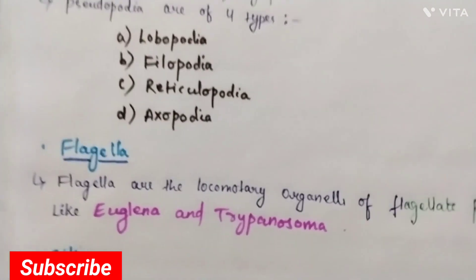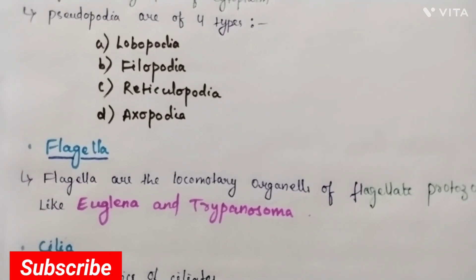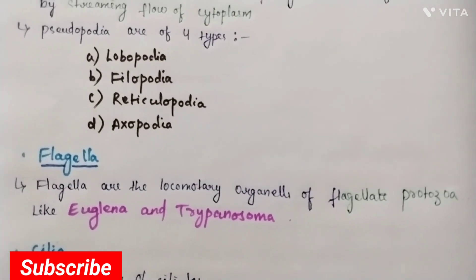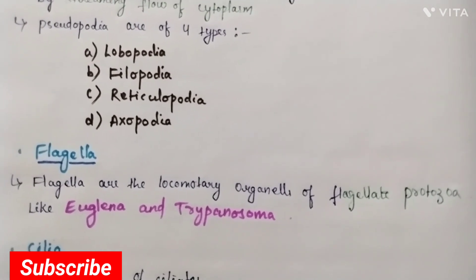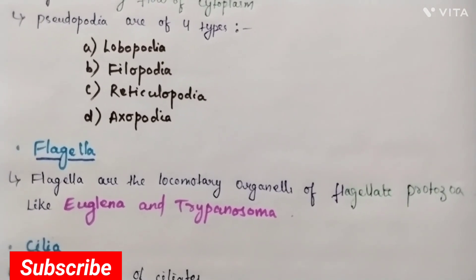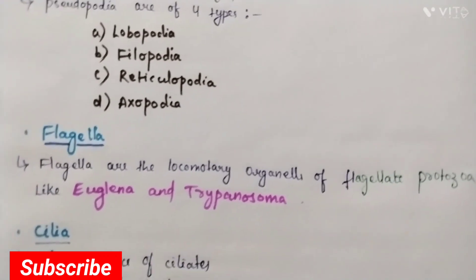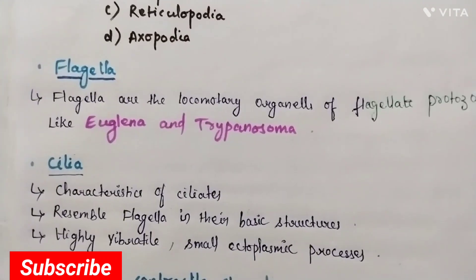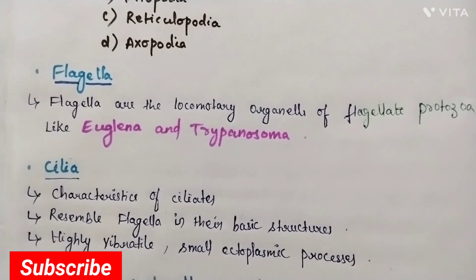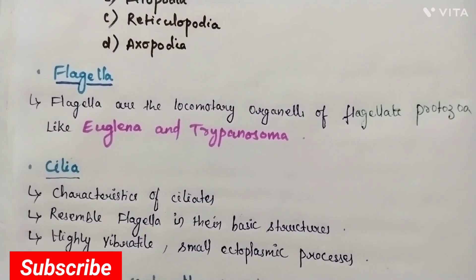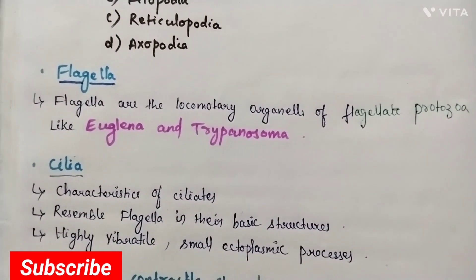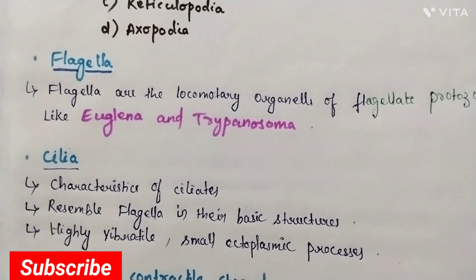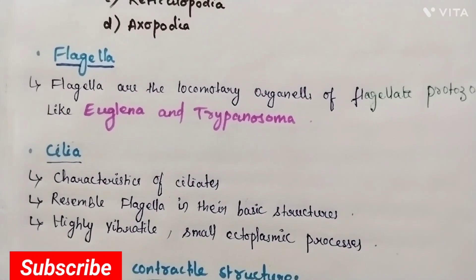Flagella are the locomotory organelles of flagellate protozoans like Euglena and Trypanosoma. Cilia are characteristics of ciliates, resemble flagella in their basic structure, and are highly vibratile, small ectoplasmic processes.